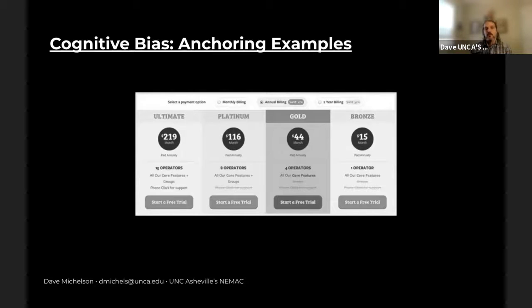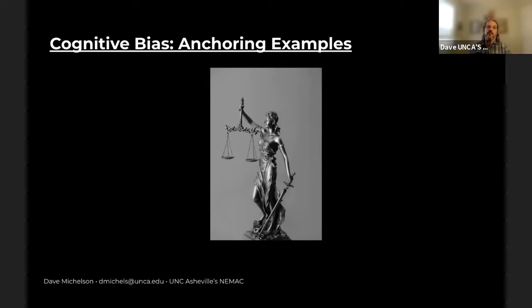Anchoring has been found in virtually every topic, sector, and industry. In pricing, you've probably seen this — they put an 'ultimate' price of $219 next to the 'gold' price they really want you to choose, making the gold price feel cheaper. This happens even to people who know about the bias. Other places it appears: in crime sentencing, when the suggested sentence was 10 years, judges gave lower sentences than when the suggested sentence was 30 years for the same crime. Food portions also show this — given a small portion, you eat less than when given a large one.